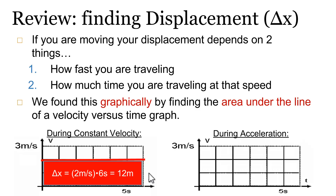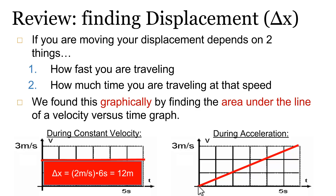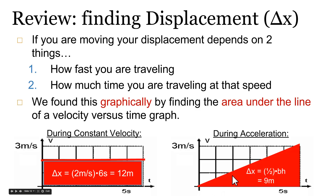This worked not only when velocity was constant. We can also use the same technique to find the displacement of an accelerating object. If something moves from an initial velocity of zero meters per second to a final velocity of three meters per second over six seconds, we find displacement by finding the area under the line. In this case it's a triangle: one-half times the base times the height, giving a displacement of nine meters.